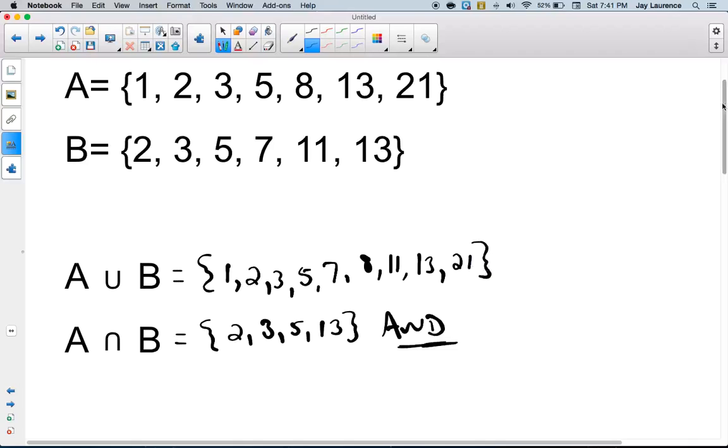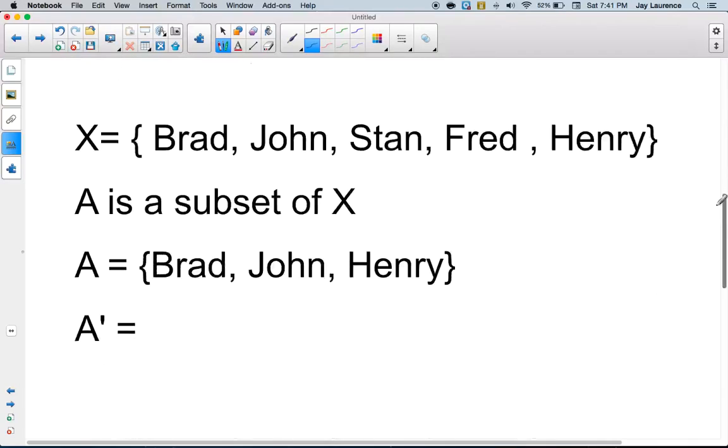Okay, pretty easy stuff. Now, complements are easy, too. Okay, let's say X is a set of Brad, John, Stan, Fred, and Henry. They're five friends. And a subset of X—Brad, John, and Henry—all were able to go to the football game.